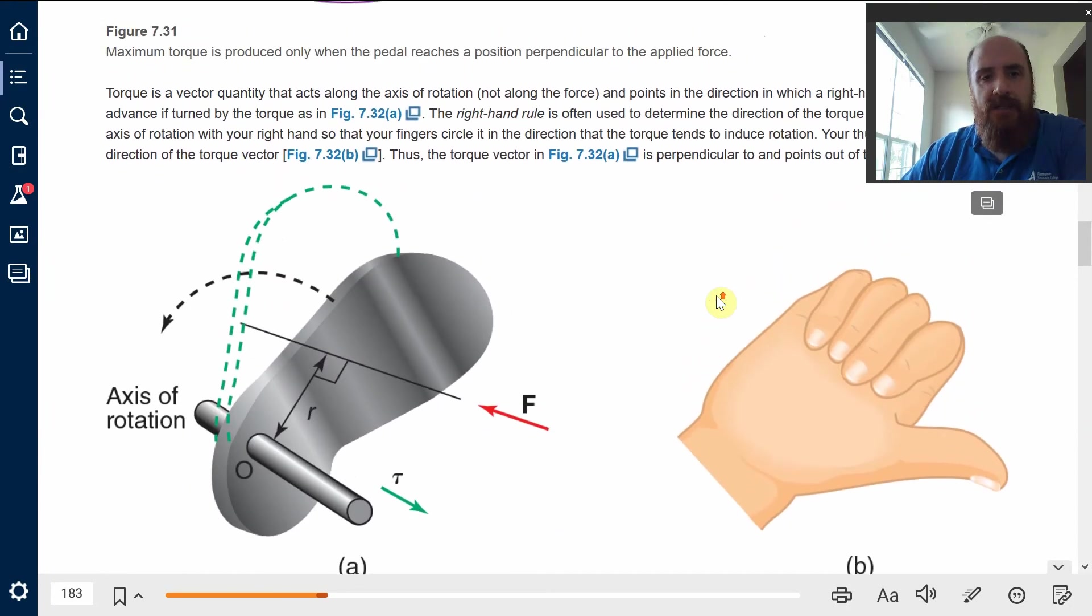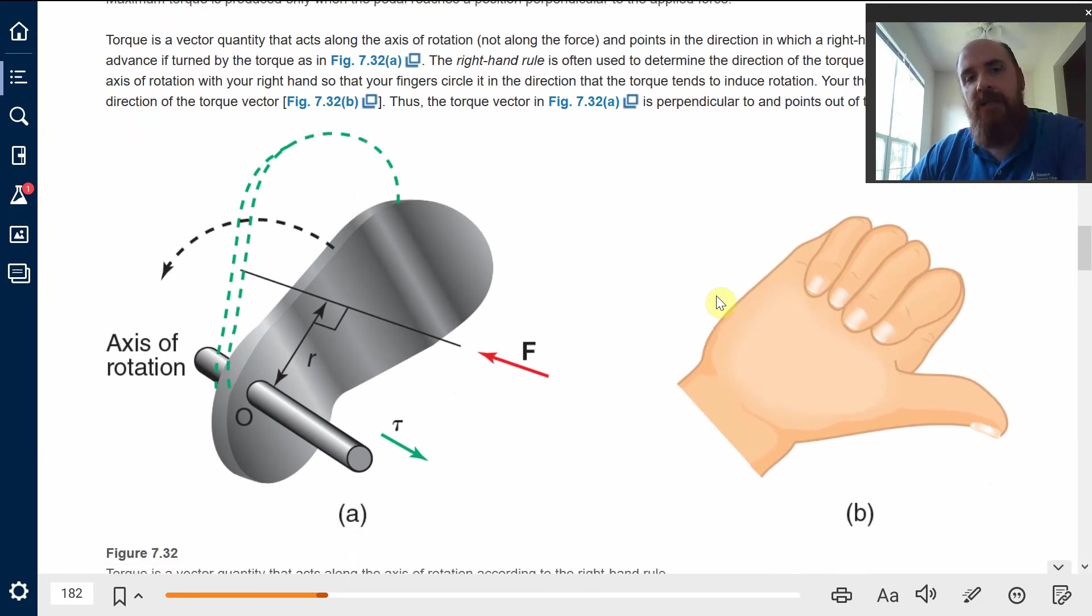The idea that torque is a vector quantity determined by this sort of right-hand rule is not important for our purposes as deep as we're going to go. It actually comes up in Chapter 9. If we skip Chapter 9, then it's not going to be important. So since it's looking like we're going to skip Chapter 9, don't worry about that.